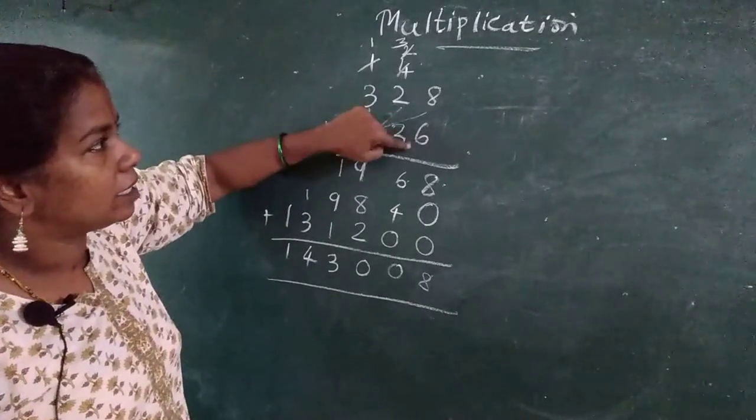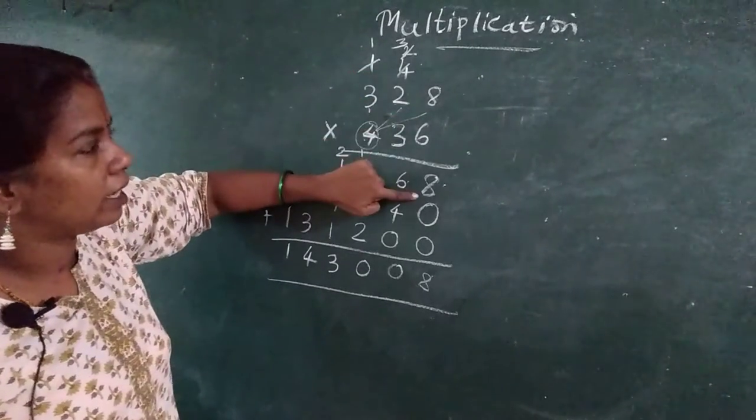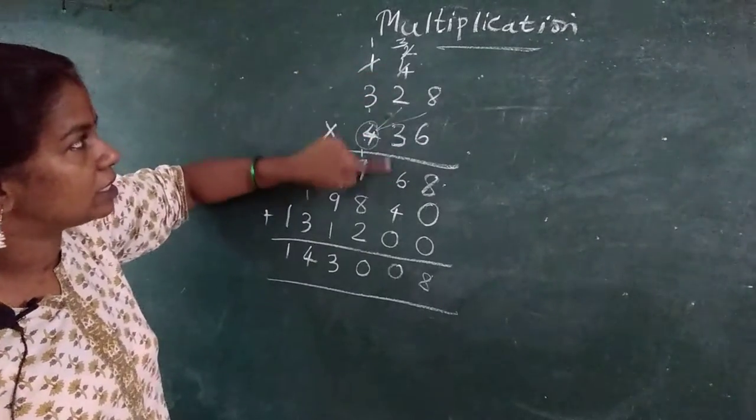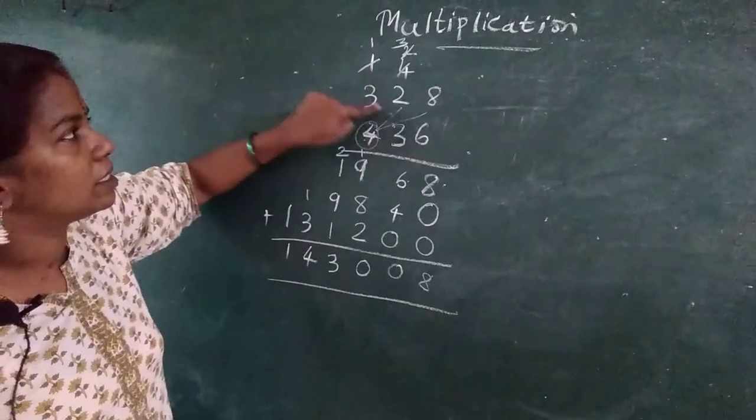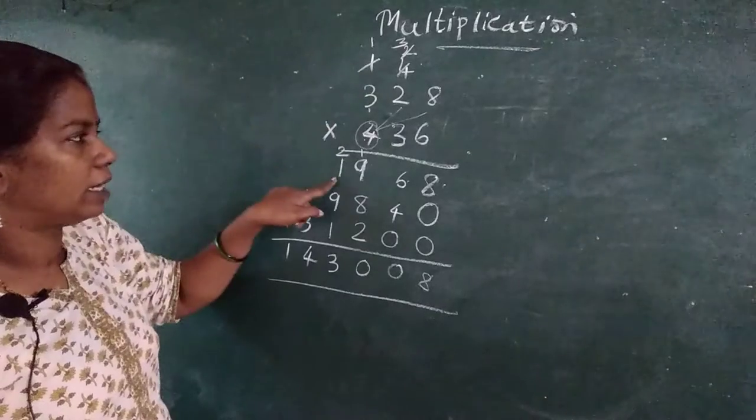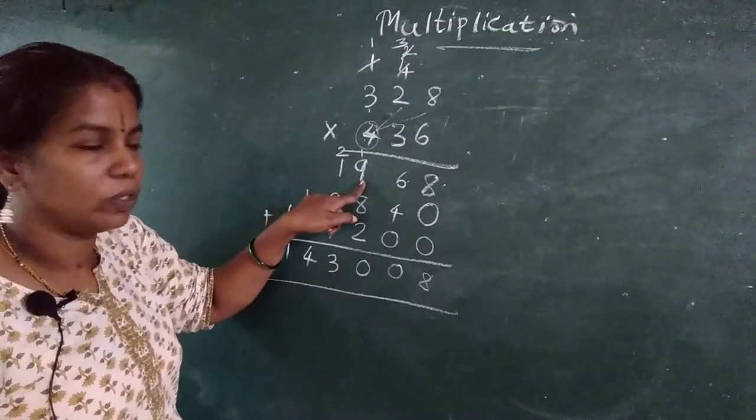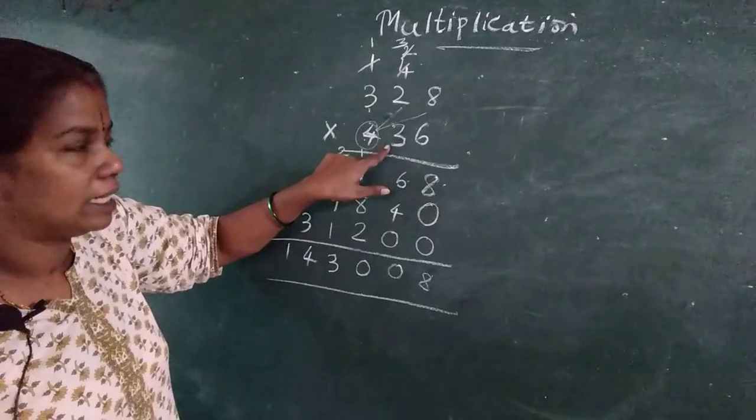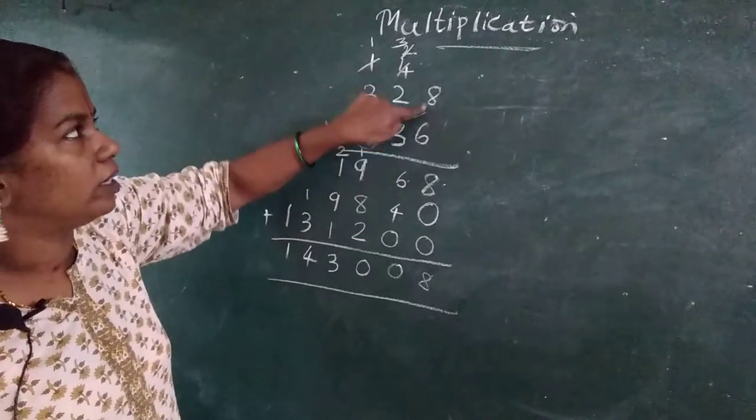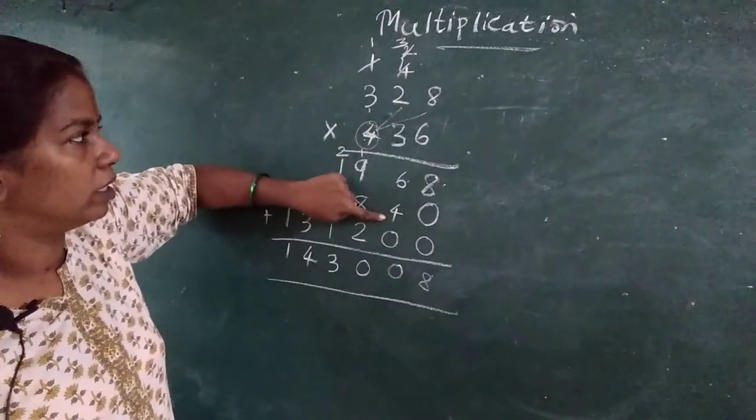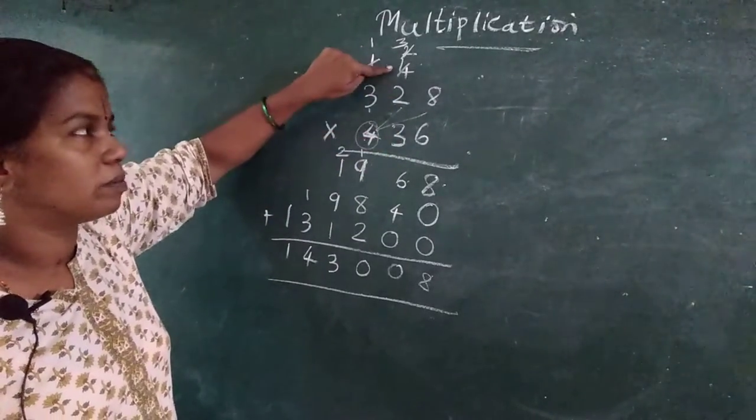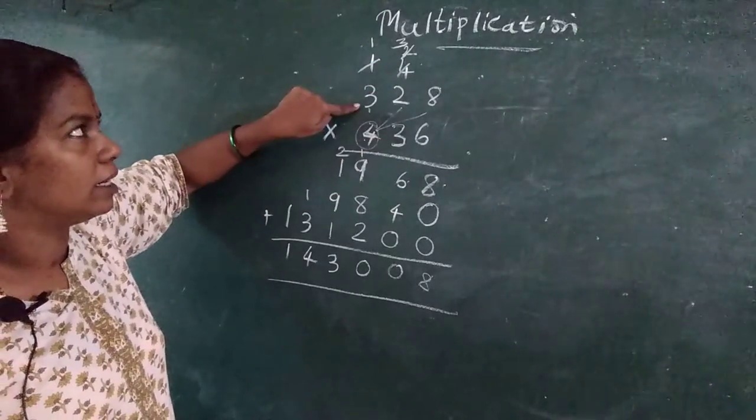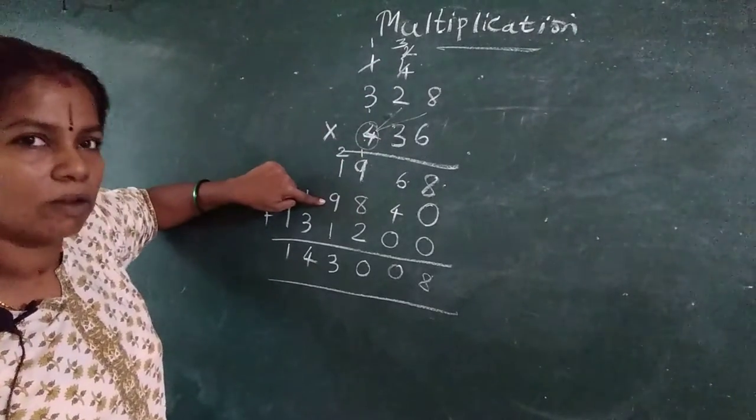6, 8's are 48. Then 6, 2's are 12. 12 plus 4, 16. 6 here, 1 carry. 6, 3's are 18. Plus 1, 20. First finished unit. Then 0. Then I will go for the tenth number. That is 3. 3, 8's are 24. 2 here, 4 here. 3, 2's are 6. Plus 2, 8. 3, 3's are 9. Got it?